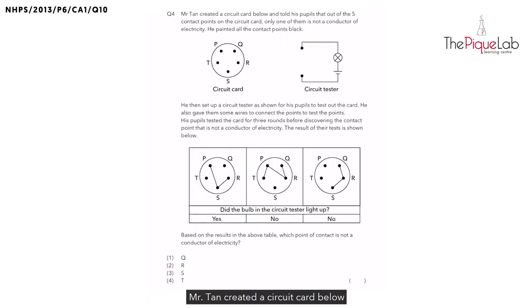Mr Tan created a circuit card below and told his pupils that out of the five contact points on the circuit card, points P, Q, R, S and T, only one of them is not a conductor of electricity. He painted all the contact points black and in the next part of the question, he is trying to get his pupils to determine which contact point is the insulator of electricity.